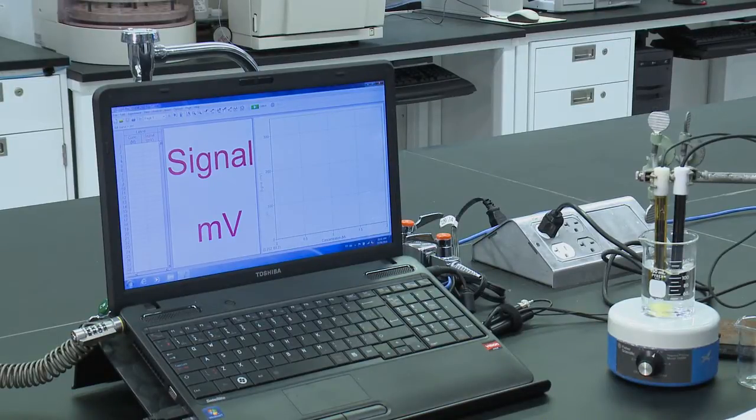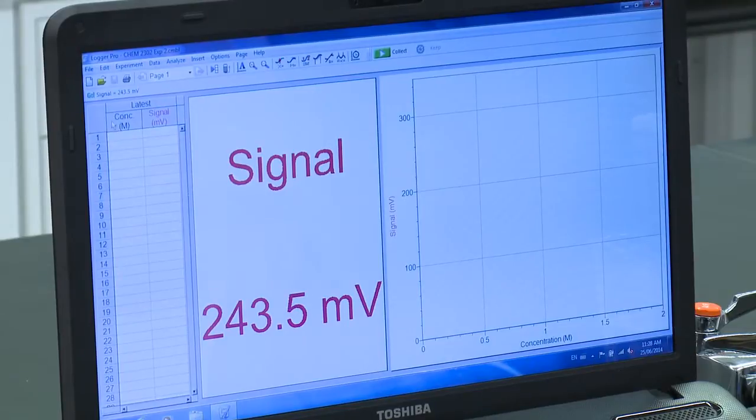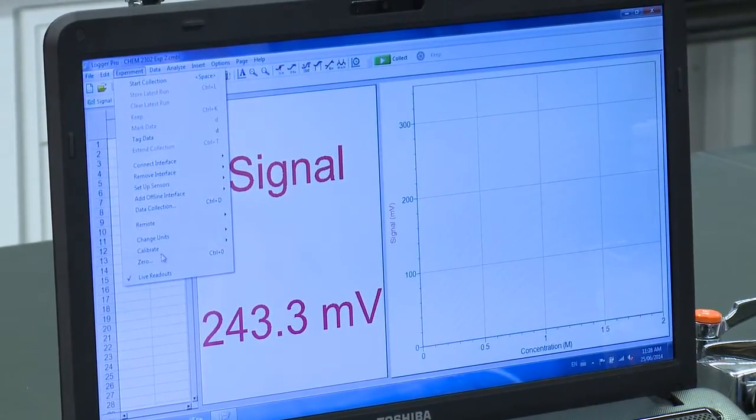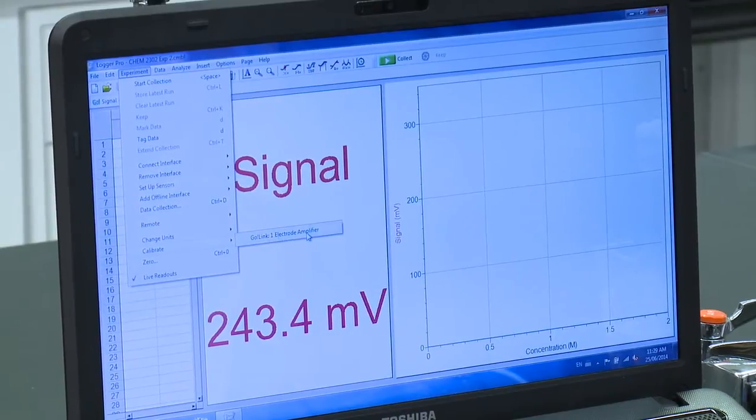Now that the correct file has been open, we want to go to Experiment, Calibrate, and click on the electrode amplifier.